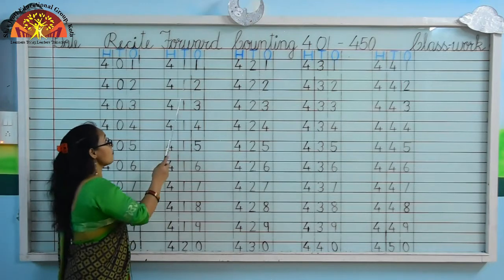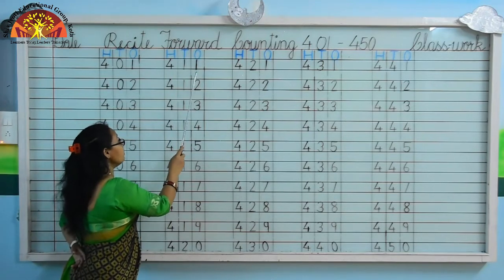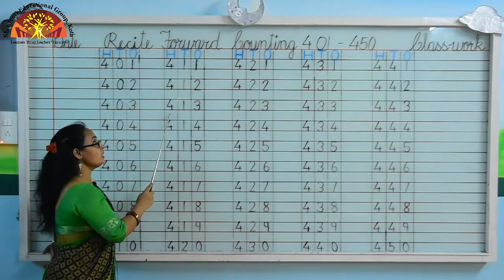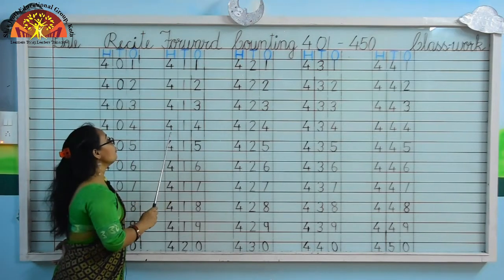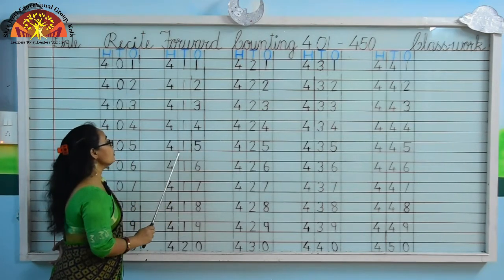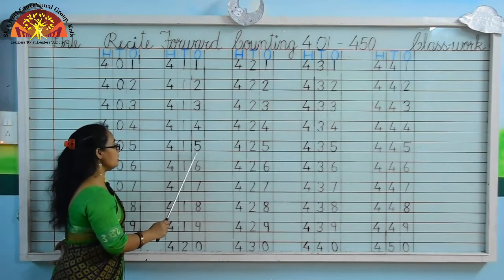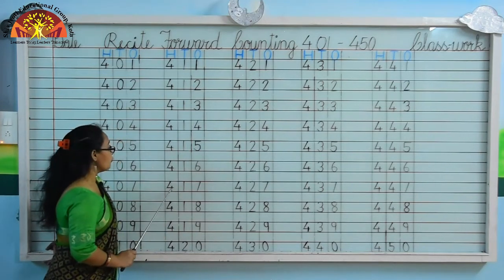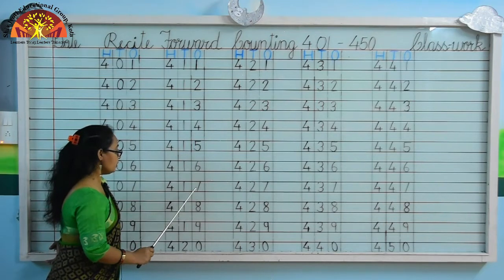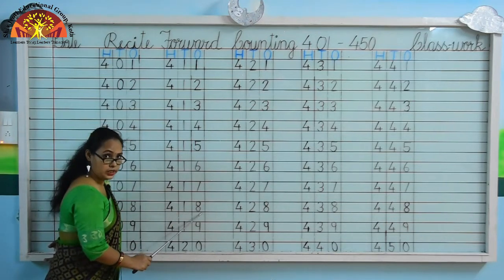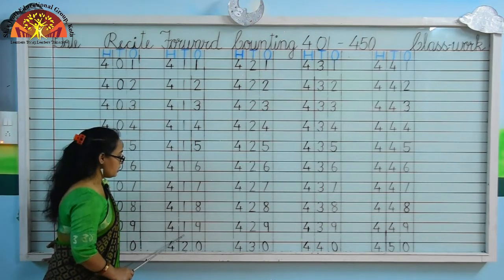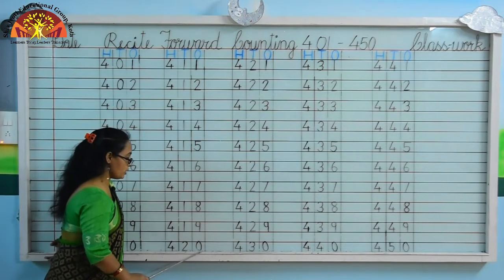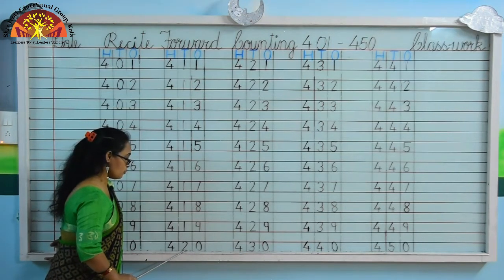Next is 411, 412, 413, 414, 415, 416, 417, 418, 419, 420.